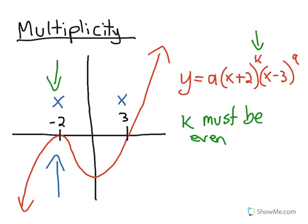So if k is 2, for instance, either side of x being negative 2 will make the value either both positive or both negative, depending on if there's a coefficient in front.